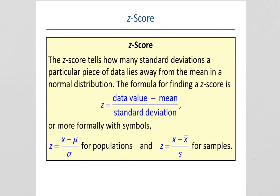The z-score tells us how many standard deviations a particular piece of data lies from the mean. The z-score is found by taking the particular data value, subtracting the mean, and dividing by the standard deviation. For a population, it would be x minus μ divided by σ, and for a sample, it would be x minus x̄ divided by s. Both are basically the same thing.